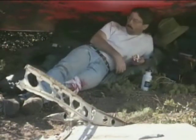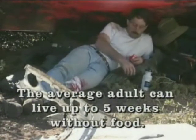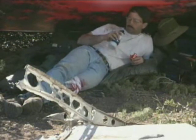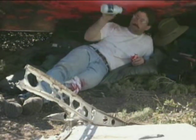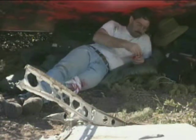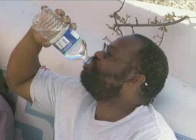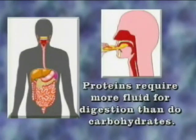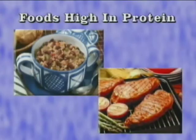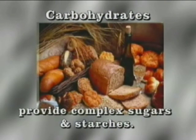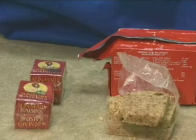Food is not a matter of immediate priority — the average adult can live up to five weeks without food. It is best to refrain from eating unless you have sufficient water to accompany it, as it takes a great amount of fluid to aid digestion. Proteins require more fluid for digestion than carbohydrates, so refrain from eating foods high in protein such as meats and beans. Carbohydrates provide complex sugars and starches, which the body utilizes as long-term energy-producing nutrients, with minimum fluid loss. When assembling your personal survival kit, it is advisable to include nutritional bars or dried fruit.